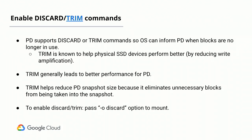The next topic is enabling discard or trim. For those with physical SSD experience, trim is highly recommended to reduce write amplification. Trim is also helpful for PD performance, but importantly, it also helps reduce your persistent disk snapshot size. Without trim, when you delete a logical file, the file system only changes metadata — those physical blocks still appear as used at the PD layer and get included in snapshots. Enabling trim ensures deleted blocks are discarded, making your snapshots much smaller. Enable it with the discard option on mount.